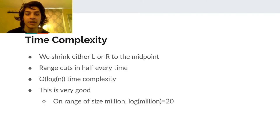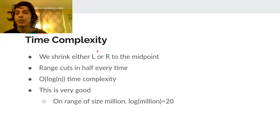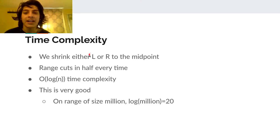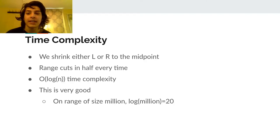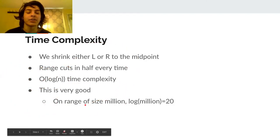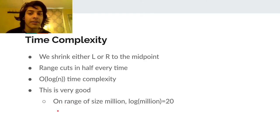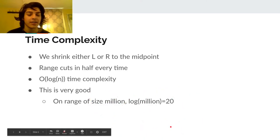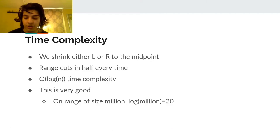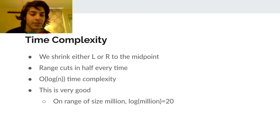Now let's consider the time complexity. Every iteration of the while loop shrinks either L or R to the midpoint, so the range basically cuts in half every time. This gives O(log N) time complexity, where N is the initial range of L and R. For a range starting at a million, log of that is only 20 steps. A billion is still only 30 — very good time complexity.